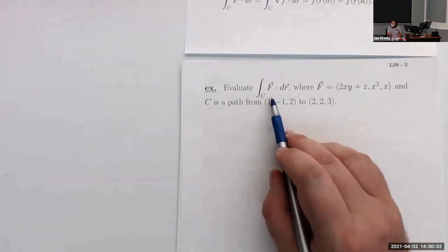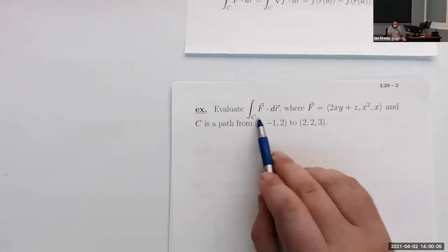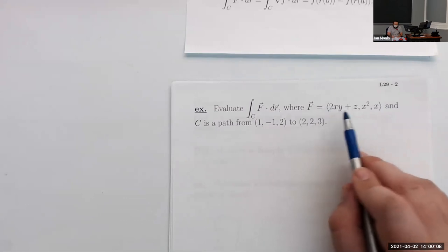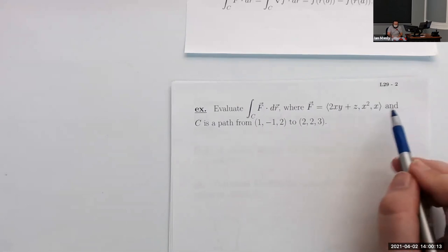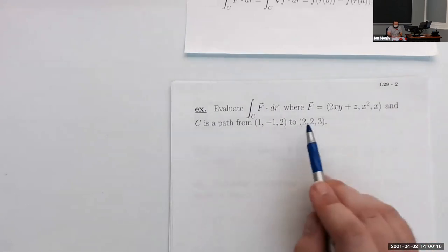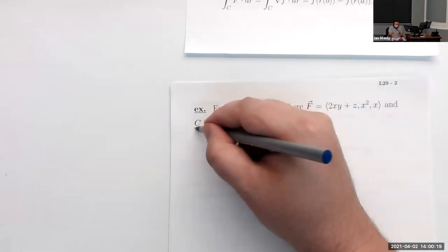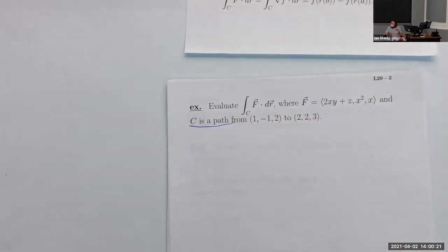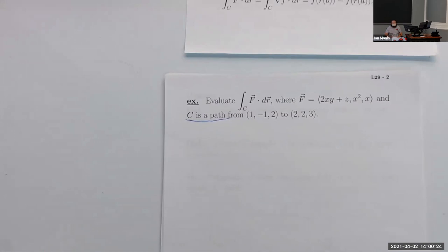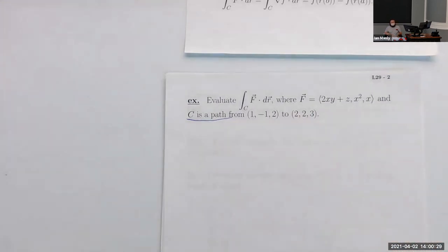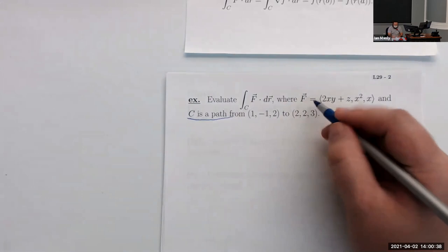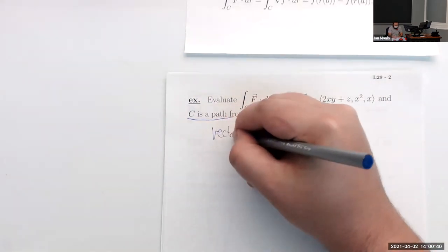Let's evaluate this line integral: f dot dr along path c, where f is the vector field (2xy + z, x², x) and c is a path from (1, −1, 2) to (2, 2, 3). The problem is they say c is a path but don't specify what kind of path it is — we could go directly between the points or squiggle around. There's no way to parameterize this curve from the given information, so we have to hope this vector field is conservative.